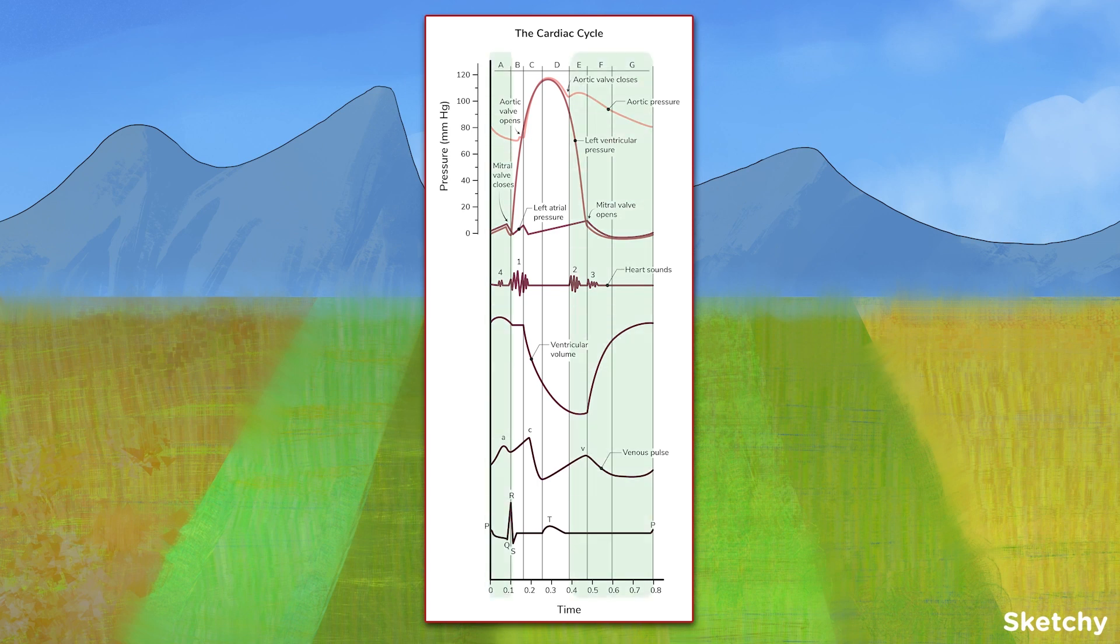Diastole, the period of time during which the ventricles are relaxing, and systole, the period during which the ventricles are contracting. These can be further subdivided into seven distinct phases, which we will walk through one at a time while looking at various changing parameters.